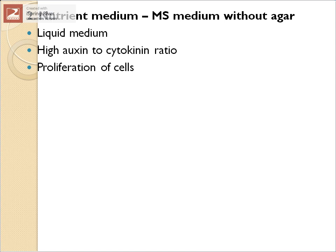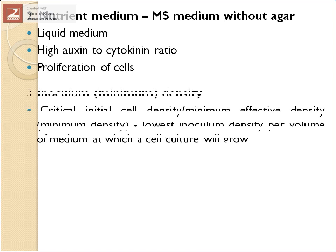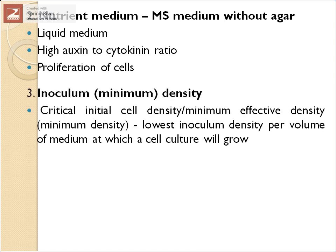The nutrient medium most commonly used is Murashige and Skoog (MS) medium, but without agar, so it remains a liquid medium. A high auxin to cytokinin ratio is maintained because it helps in proliferation of cells.